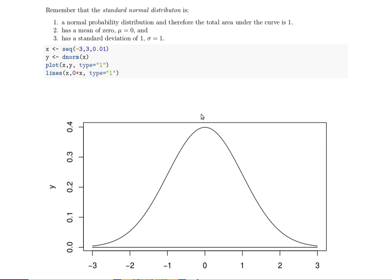Secondly, a standard normal probability distribution has a mean of zero, see there's the zero, and a standard deviation of one.